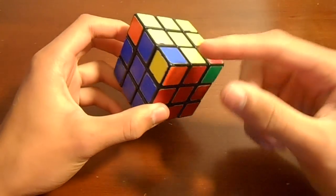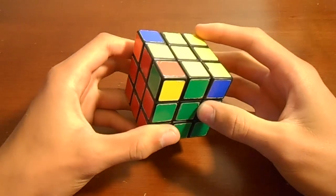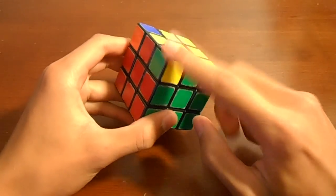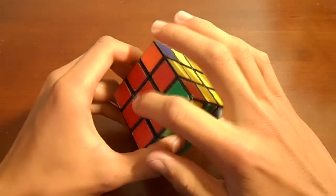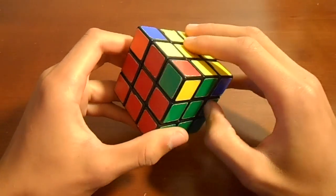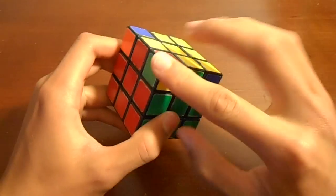So the first thing that we need to do is we need to identify which corner pieces are oriented correctly. So how we do that is, I'll take this one because it is oriented correctly for example, just look at the three center slash side colors around it, and then if those three colors are on that corner piece, then it is properly oriented.